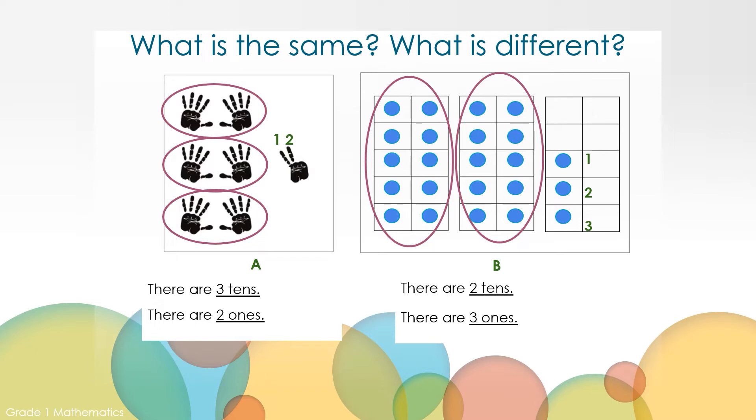What number is represented by each picture? Picture A represents the number 32. Picture B represents the number 23.